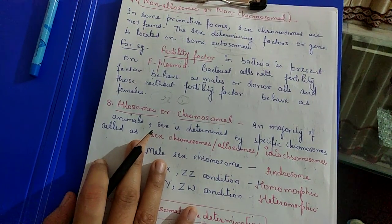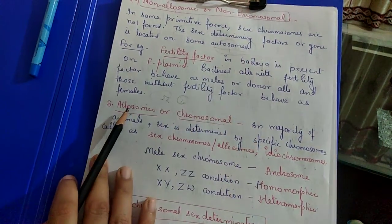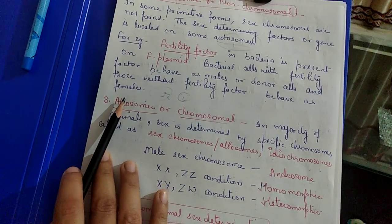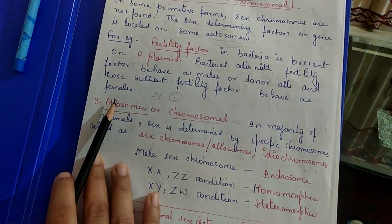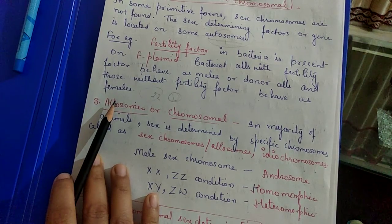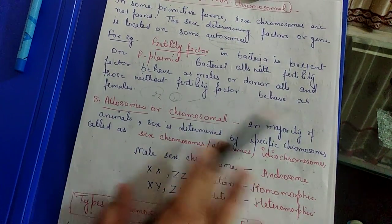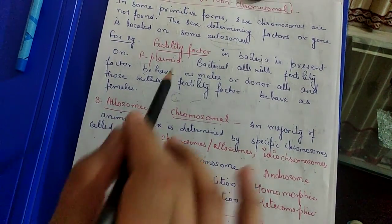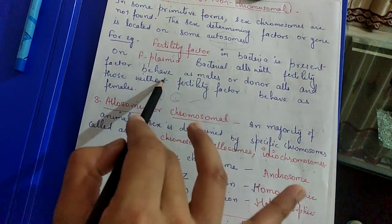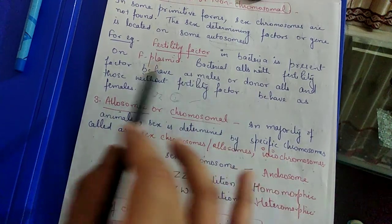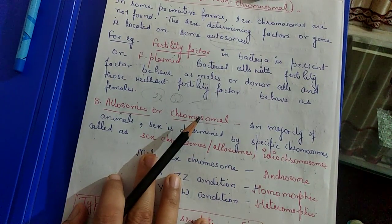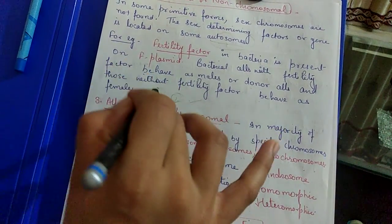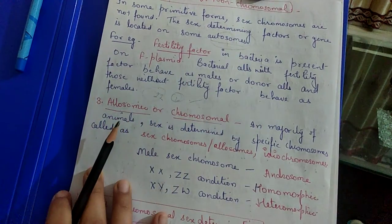The factors that determine sex are present on autosomes. We have an example of bacteria. Those of you who studied in plus one might remember that bacteria have a factor called fertility factor that is present on their F plasmid. Plasmid is extra chromosomal DNA, separate from main DNA. Bacteria which have fertility factor present are males or donor cells, and those which don't have it are females.